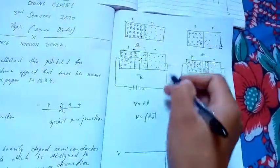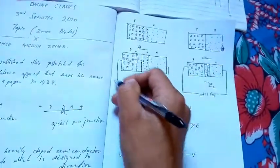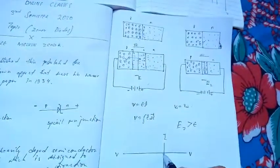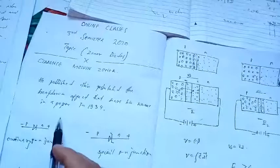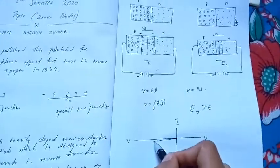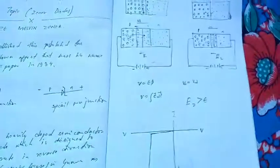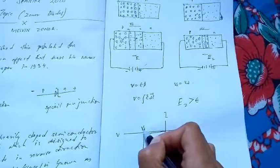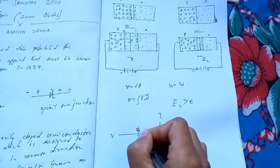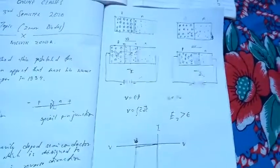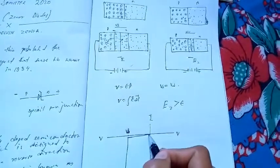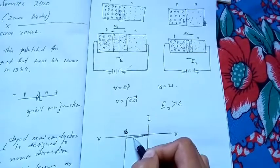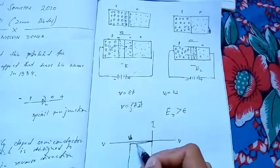This is the breakdown voltage. If the voltage increases beyond the breakdown voltage, the current suddenly increases. This is what we call breakdown. The Zener diode is designed to operate at this breakdown voltage.